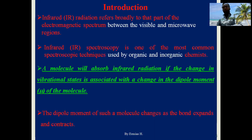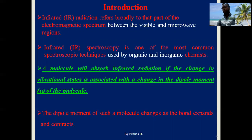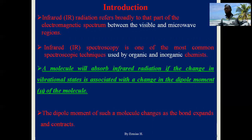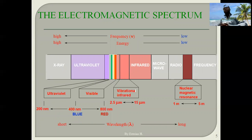Infrared radiation refers broadly to that part of the electromagnetic spectrum that exists between the visible and microwave regions. Infrared spectroscopy is one of the most common spectroscopic techniques used by organic and inorganic chemists to identify different functional groups. Molecules absorb infrared radiation when the change in vibrational state is associated with a change in the dipole moment of the molecule.